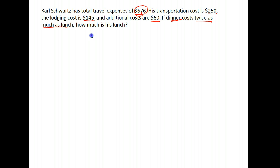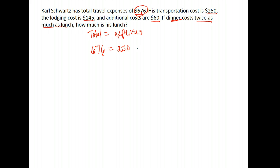So this is a little different. This time they gave us the total and we have to find out some individual expenses. The total was $676 — that goes over here. Over here, let's put the individual expenses: $250 for transportation, $145 for lodging, and $60 for anything else.